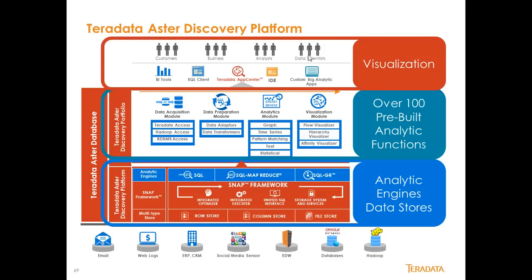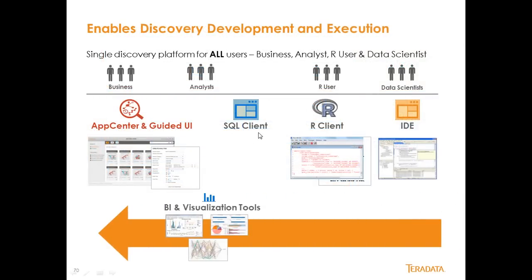At the top is the tools area covering who can use Aster. This tool is really valuable for the business, for business analysts, reporting analysts, and data scientists. You can use a variety of tools — coming soon is an R client where you can take advantage of R against an MPP or very large data structure. There will also be an App Center and guided UI products. Any SQL client that is JDBC or ODBC capable will work right away, and business intelligence tools like Tableau, Cognos, and MicroStrategy are usable right out of the box against Aster using a JDBC or ODBC driver.